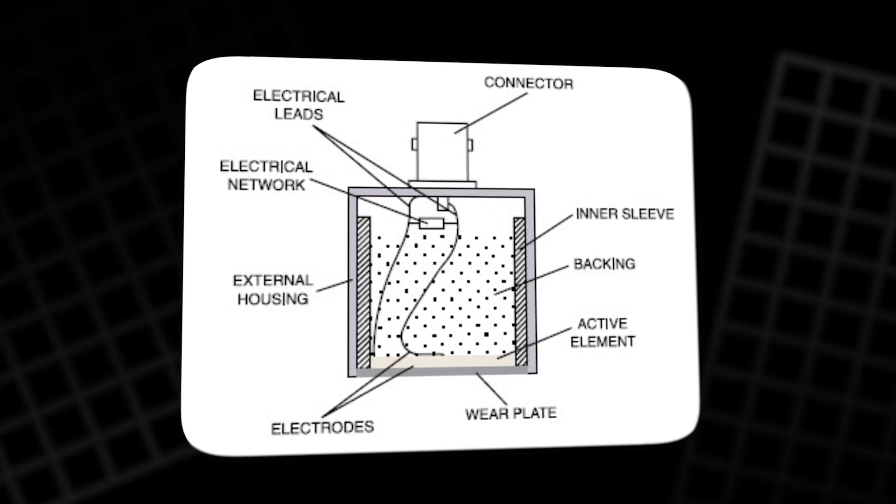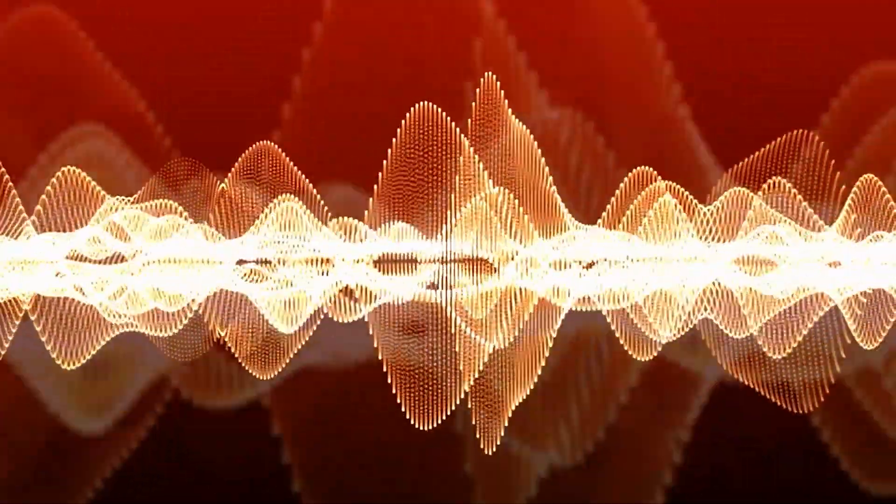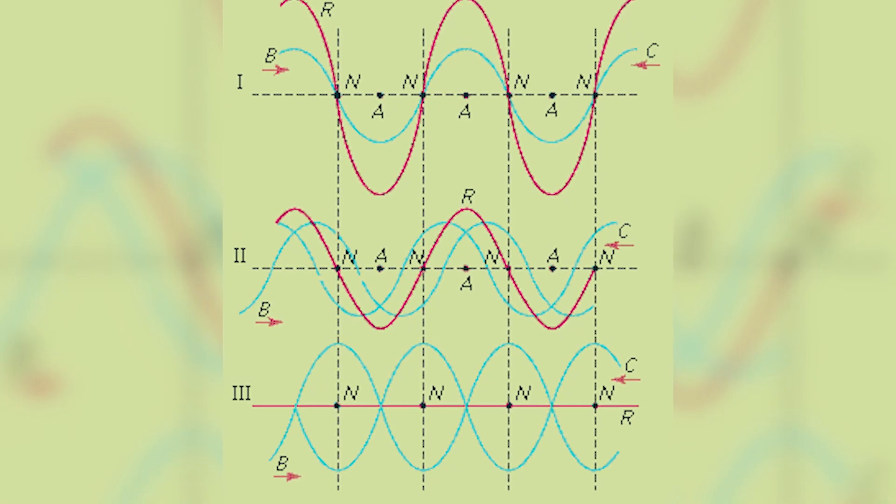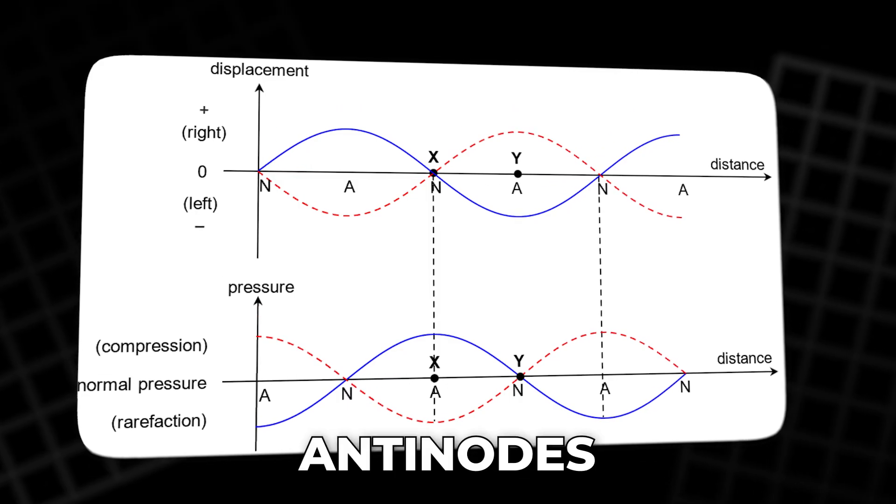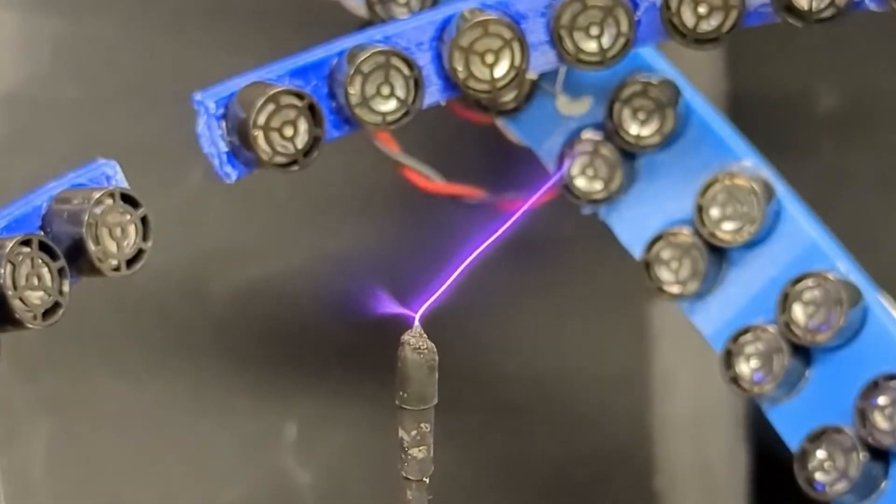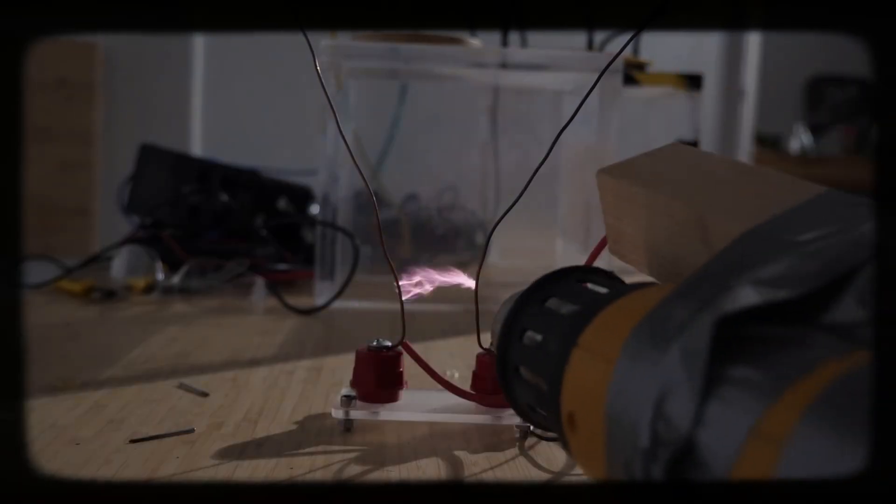When ultrasonic transducers, devices that generate very high-frequency sound, are placed facing each other, they can form what's called a standing wave. In a standing wave, some regions of the air vibrate strongly while others barely move. The points of no movement are called nodes, and the points of maximum pressure fluctuation are antinodes. Large or rigid particles tend to move towards the nodes, while smaller or more flexible ones drift towards the antinodes. This principle allows scientists to levitate small particles or droplets in midair using sound alone.